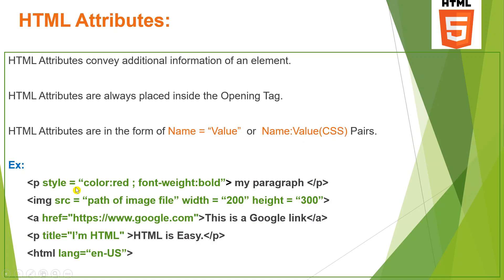Let us see one example. Take a basic paragraph tag — you need to display the content 'my paragraph' in red color and bold font. If you want that functionality, you need to specify it as attributes in the opening p tag itself. After the tag name p, give a space and specify the attributes. Here I specify the CSS style attribute — inline styling — so: style="...".